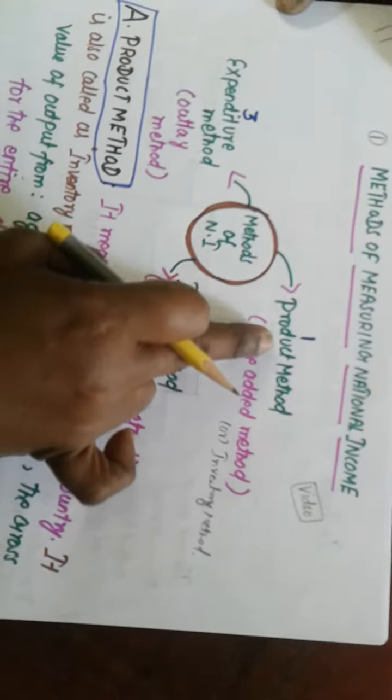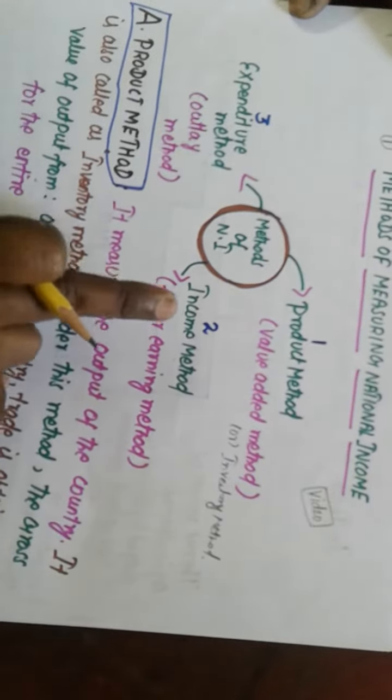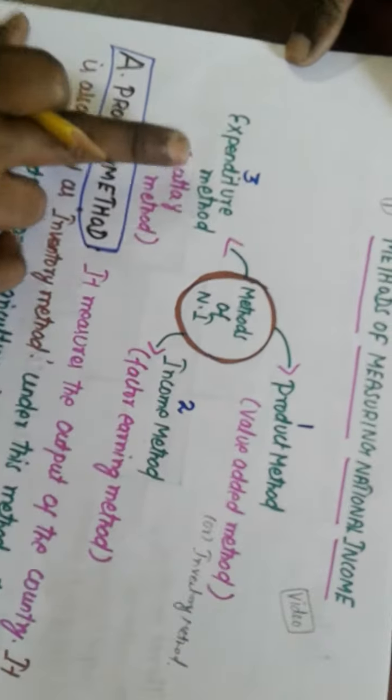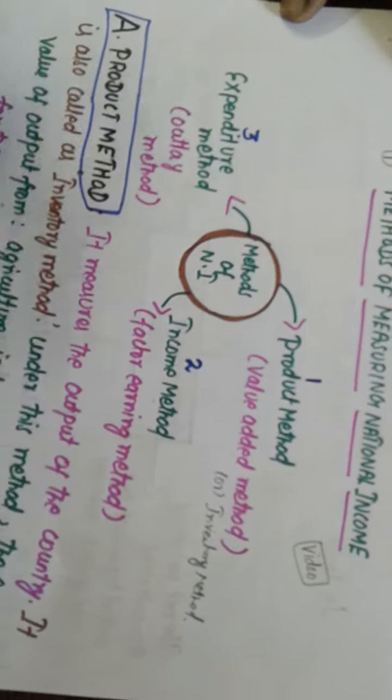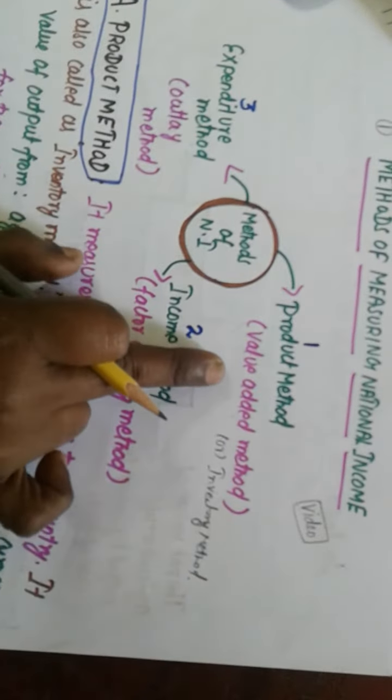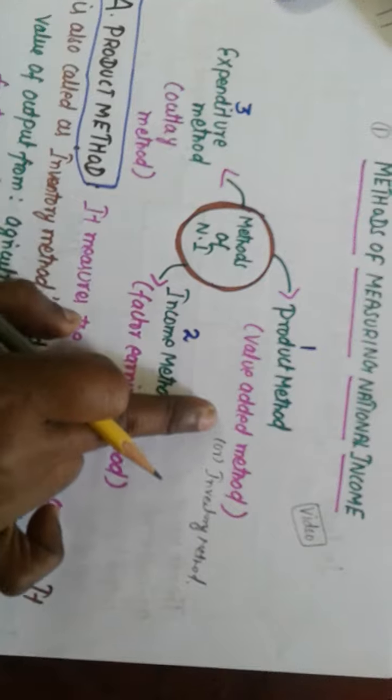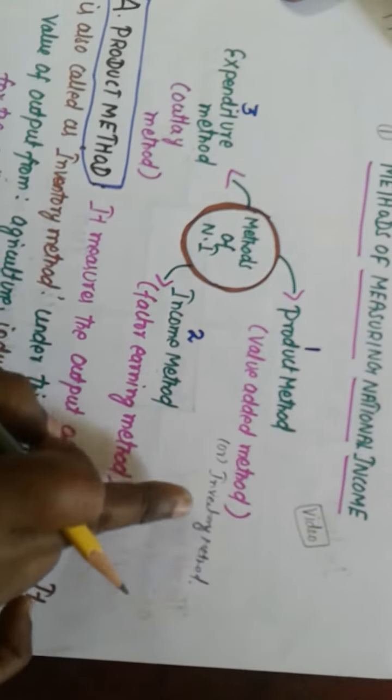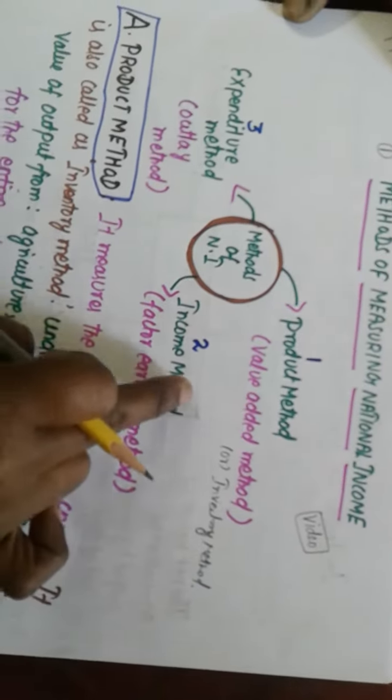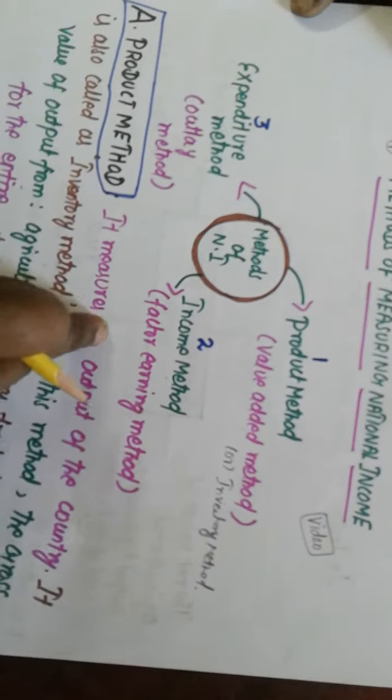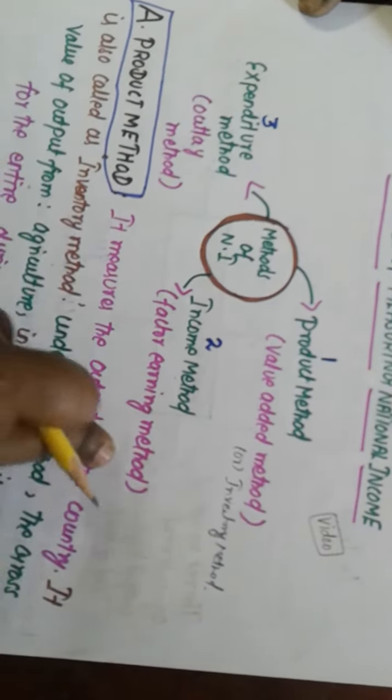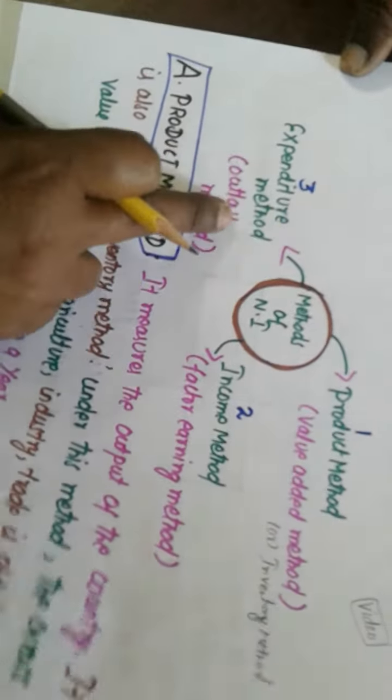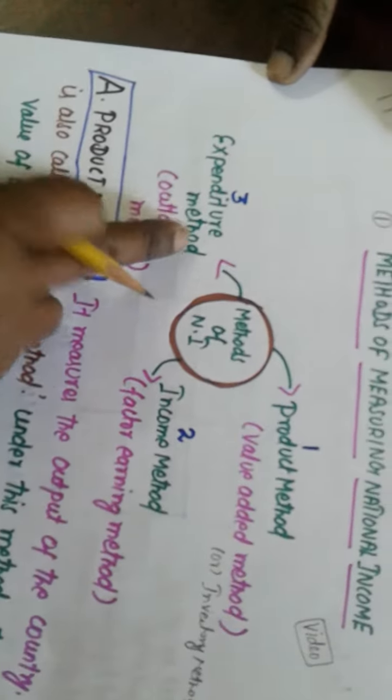First one, product method. Second one, income method. Third one, expenditure method. This product method is also known as value added method or inventory method. Income method is also known as factor earning method. Expenditure method is also known as outlay method.